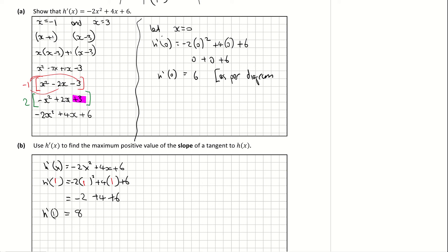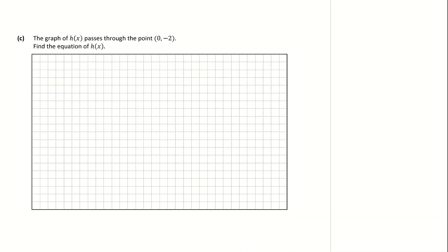If we keep on scrolling down now to part C, it's telling us that the graph of h(x) passes through the point (0, -2). Find the equation of h(x). Just to recap what we have here, h'(x) is the derivative of my original cubic function, which is -2x² + 4x + 6. So we want to find what was our cubic function before it was differentiated. So we're doing integration. I'm looking for the integral of -2x² + 4x + 6. Now the important bit here is our constant.